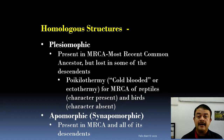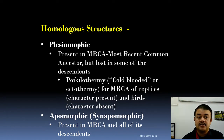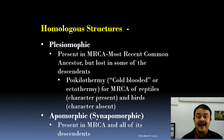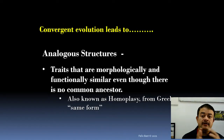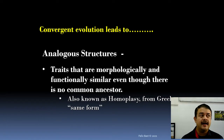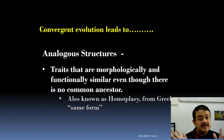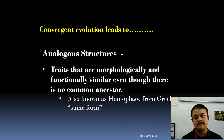Apomorphy means a character present in the MRCA and all its descendants. For example, mammary glands are a shared derived feature of all mammals — females of every mammal species have mammary glands, which is why we define Mammalia as a natural, monophyletic group. Convergent evolution leads to analogous structures — it is artificial, not natural. Traits that are morphologically and functionally similar without a common ancestor are called homoplasy, from the Greek for 'same form.'